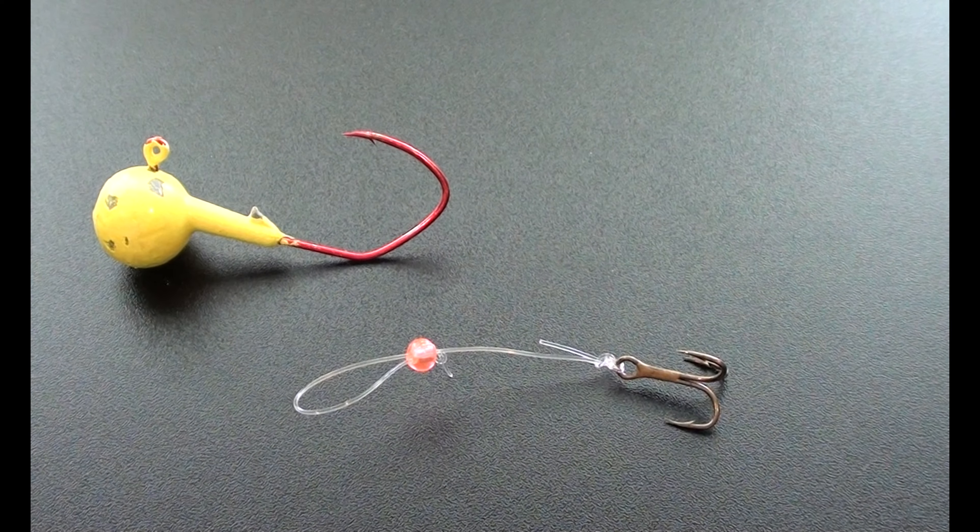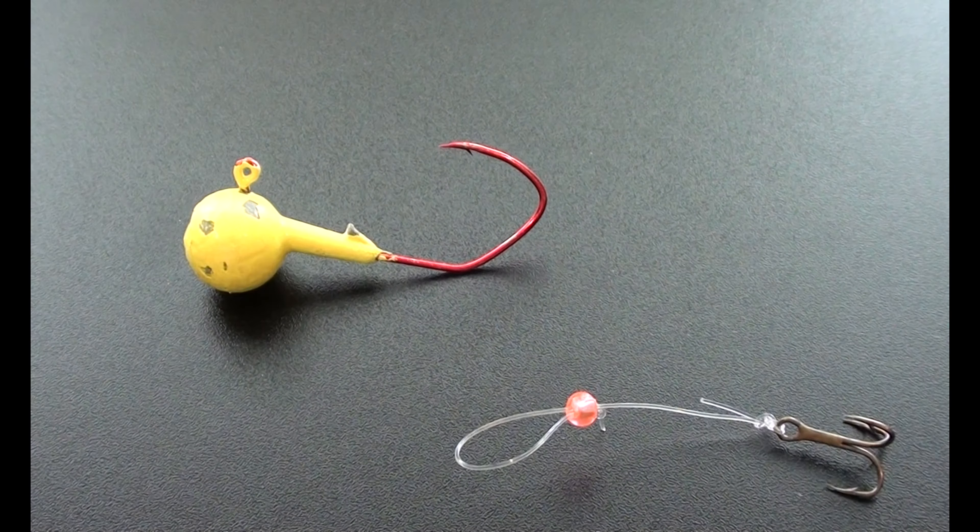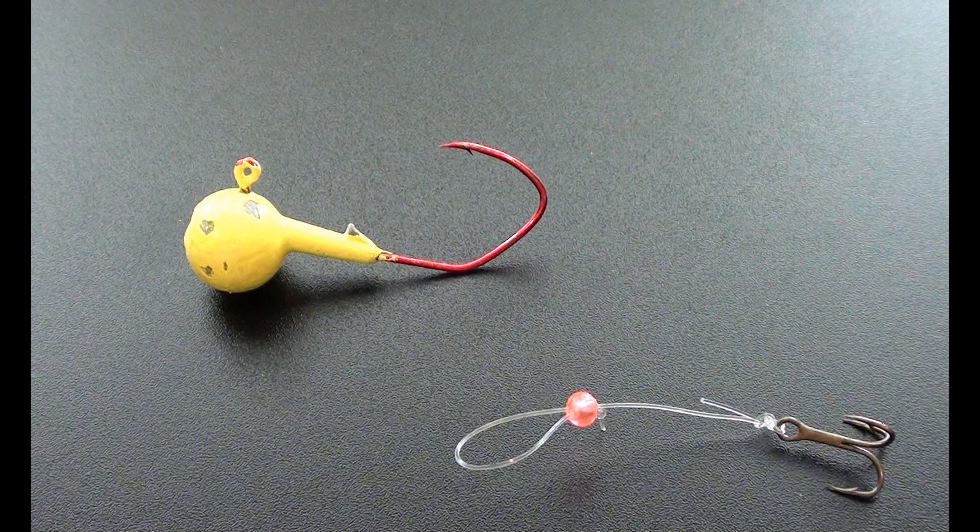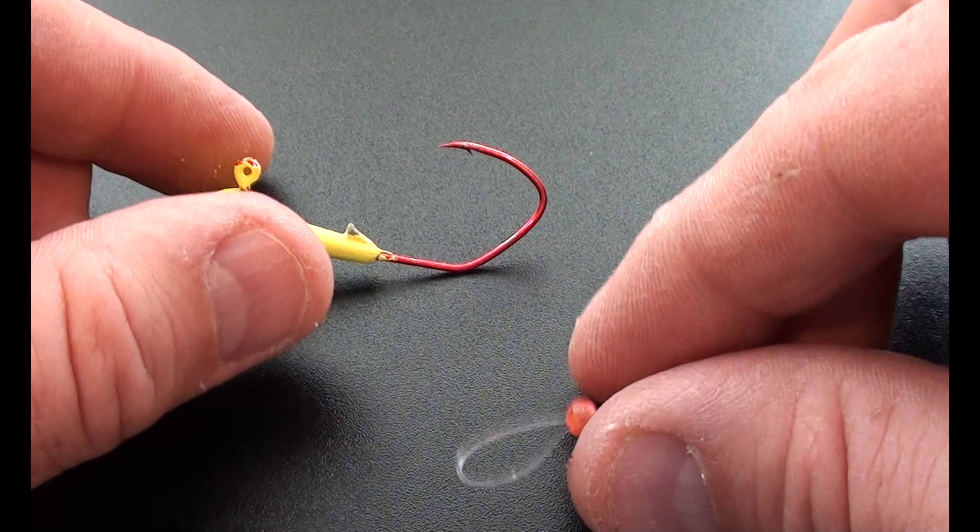That doesn't mean that the minnows won't come off. I mean obviously after a time they're going to wear out and you're probably going to tear a hole through their lip and they're going to fall off anyway. But I've just found that this method keeps them on there much much longer and gives you much more time with that minnow on your bait. Give you an opportunity to get a fish.